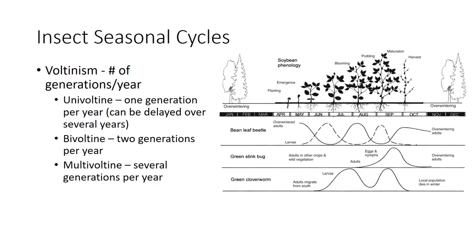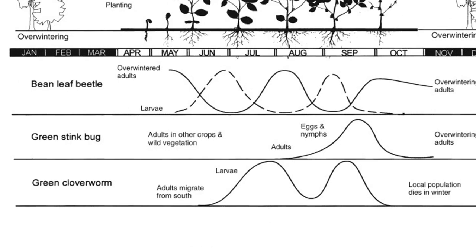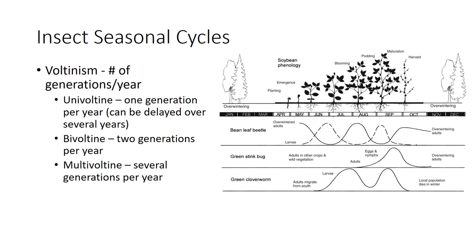Insects are short-lived creatures whose lives can be measured by their voltinism—the number of generations per year. Most insects take a year or less to develop, with either one generation per year in univoltine insects, two in bivoltine insects, or more than two in multivoltine or polyvoltine insects. Knowing the life cycle of a pest and what stage you expect to see on a crop when scouting can help you plan your management strategy. As you can see in the diagram, the leaf beetle is multivoltine, the green stink bug is univoltine, and the green clover worm is bivoltine. Univoltine cycles are common among grasshoppers, corn rootworms, and many other species.